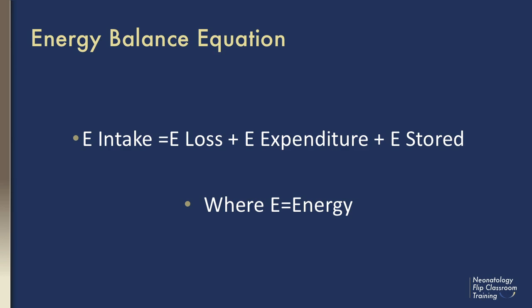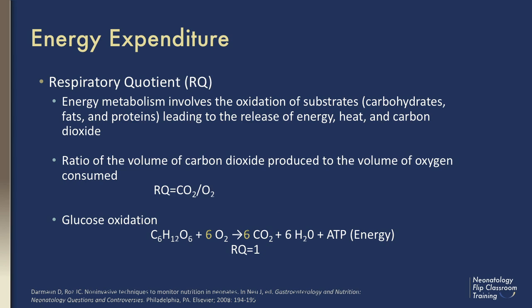Energy expenditure can be determined by measuring the heat production from consuming substrate. When substrate such as carbohydrates, fats, and proteins are oxidized, energy, heat, and carbon dioxide are released. These oxidation products cannot be used directly; instead, they must be converted into usable forms of energy, mostly ATP.